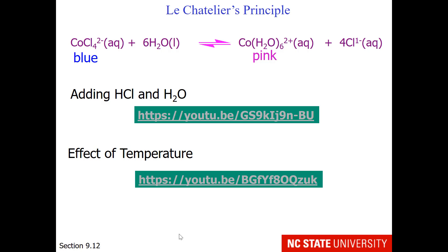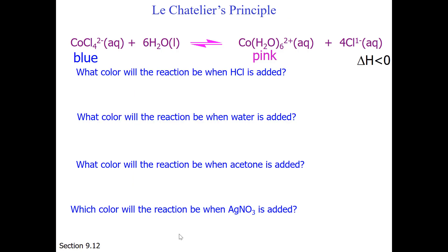Now let's take a look at what happened with the equilibrium. Our first question is, what color will the reaction be when HCl is added? Well, you saw that. It turned blue. But why? Two things are happening. First, by adding HCl, we're adding chloride. When you add product, you shift the reaction to the left.